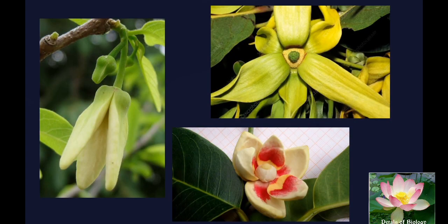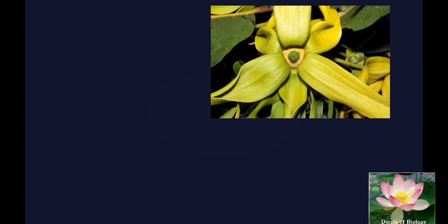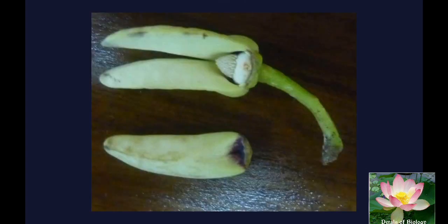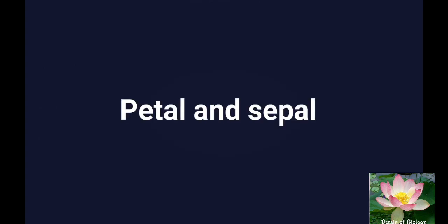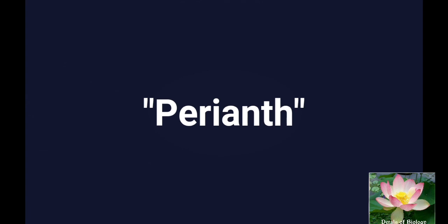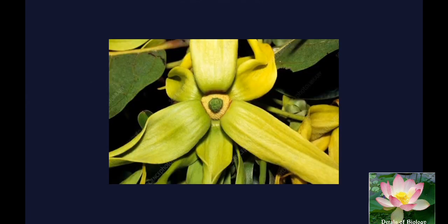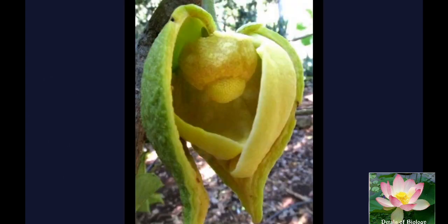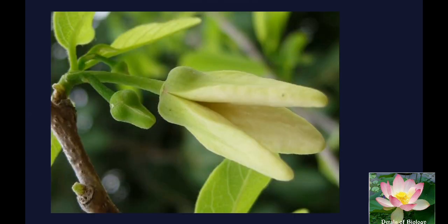Flowers are usually solitary, regular, hypogynous, spirocyclic, bisexual and trimerous. Since the sepal and petals are indistinguishable, it is commonly known as perianth. Perianth is mostly in three whorls; they are free, each of the whorl consisting of three members. The outer whorl is sepaloid and valvate.